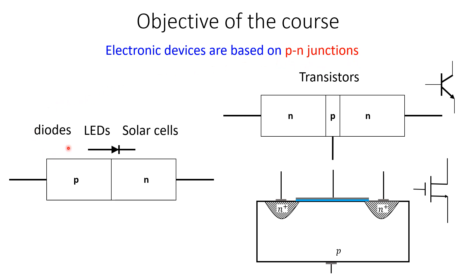For example, diodes are PN junctions, LEDs are PN junctions, solar cells are PN junctions, and transistors are two PN junctions. So if we understand the physics of PN junctions, we will already have understood the physics of diodes, LEDs, and solar cells, and we will be very well placed to understand the physics of transistors and other electronic devices.